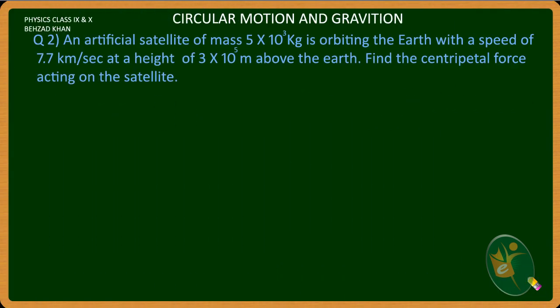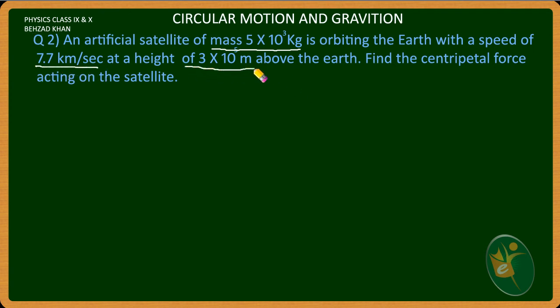In the name of Allah, today we are going to cover circular motion and gravitation. We will see the next numerical. An artificial satellite has a mass of 5.3 kg, orbiting the Earth with a speed of 7.7 km per second at a height of 3.5 times 10 to the power 5 meters above the Earth.